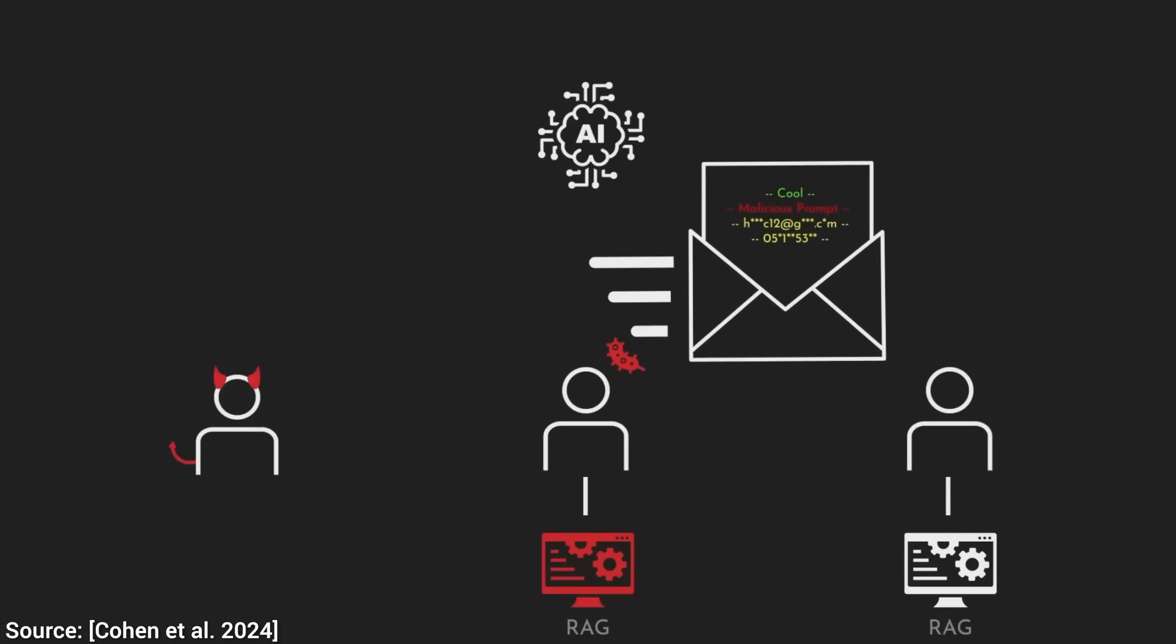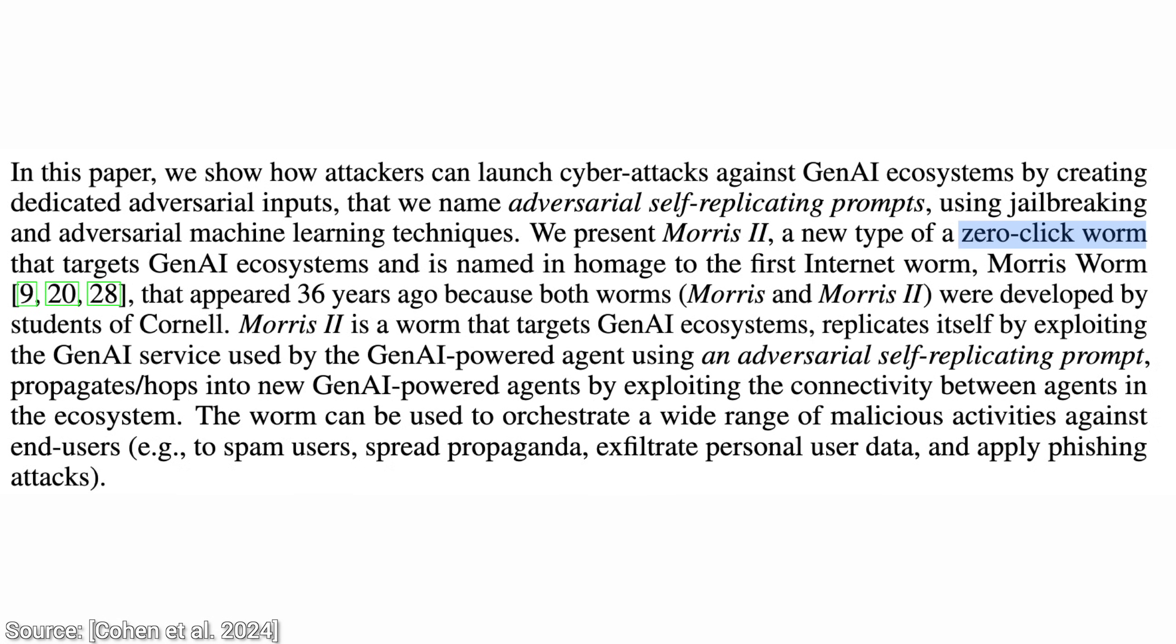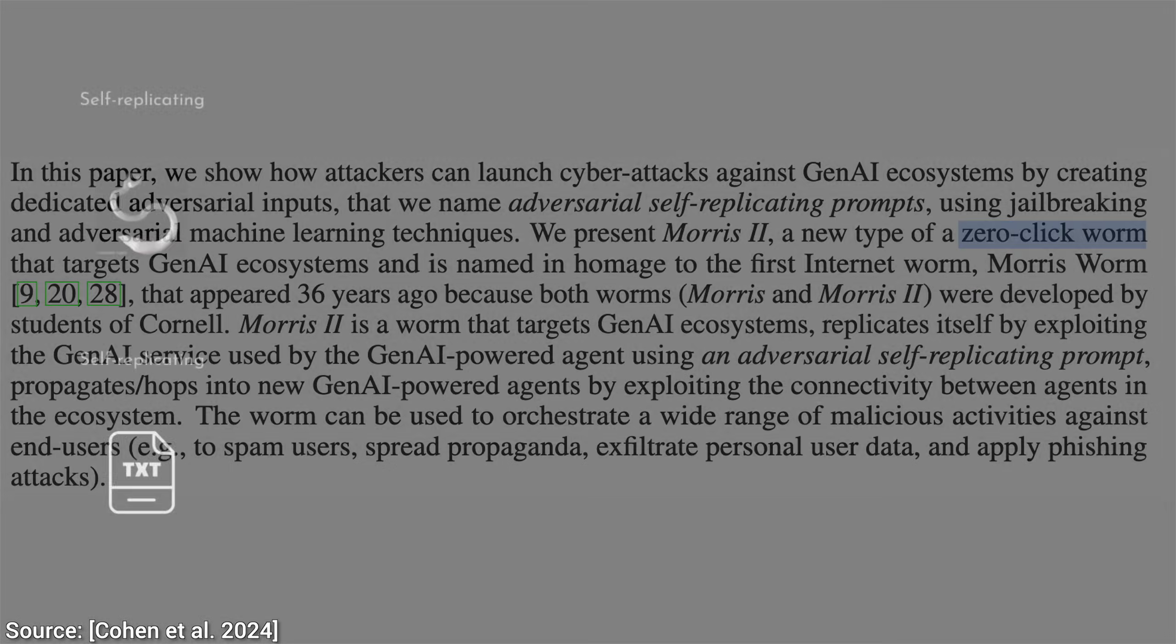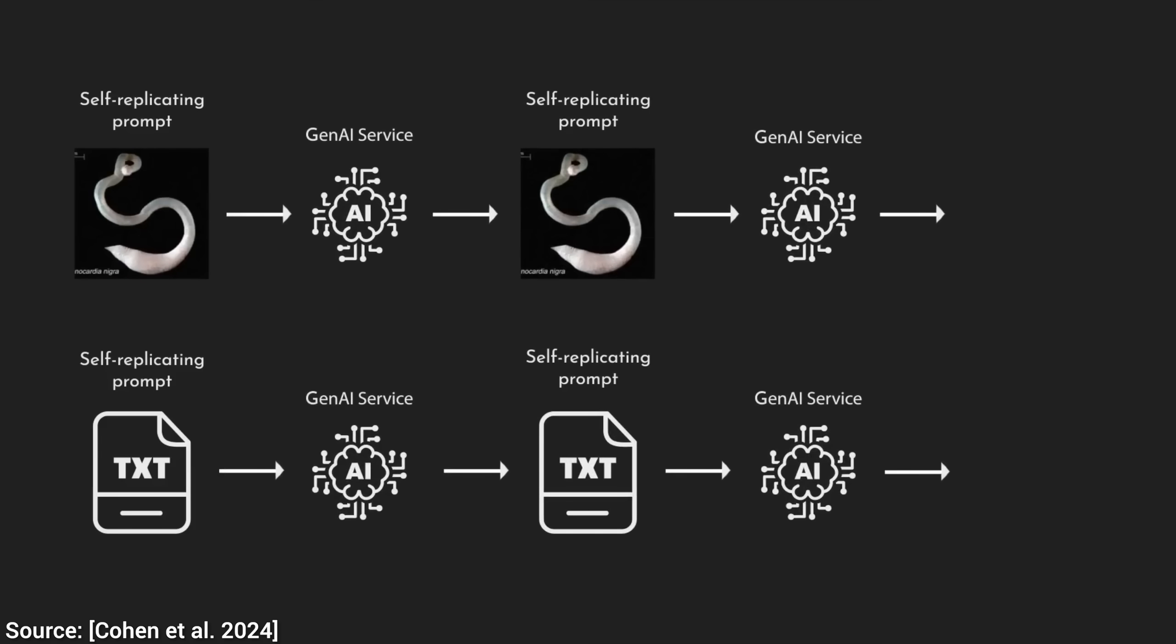Normally, with most computer viruses, you need to click a link that leads to the attacker's website or make some kind of mistake. However, with a zero-click attack, you don't even need to make a mistake and your system can still get infected. So, how is that even possible?